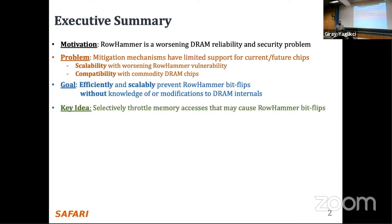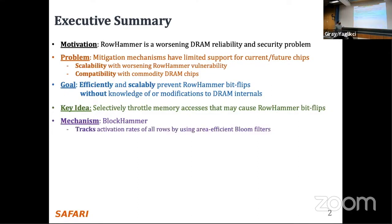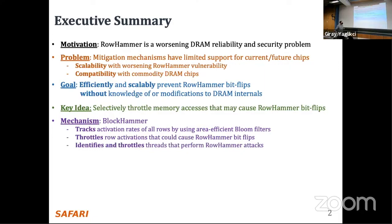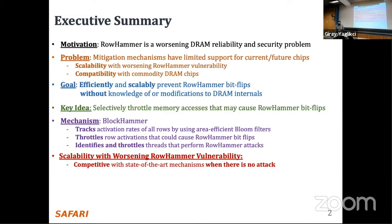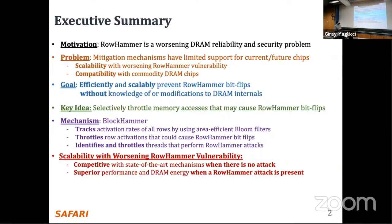Our key idea is to selectively throttle memory accesses that may cause Rowhammer bitflips. Our key mechanism is called BlockHammer. BlockHammer tracks activation rates of all rows using area-efficient bloom filters, throttles row activations that could cause Rowhammer bitflips, and identifies and throttles the threads that perform Rowhammer attacks. BlockHammer provides a full defense against Rowhammer attacks. It is competitive with state-of-the-art mechanisms when there is no attack, and superior in performance and DRAM energy consumption when a Rowhammer attack is present.